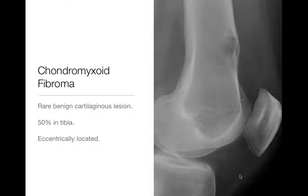The last lesion is chondromyxoid fibroma — pretty rare, benign cartilaginous lesions. You're not going to see many of these. They tend to be eccentrically located and are common in the tibia. Here's an example of a chondromyxoid fibroma, a benign lesion.